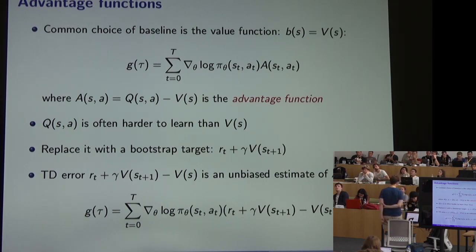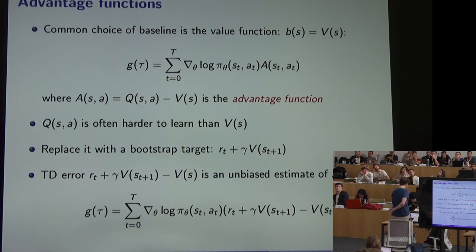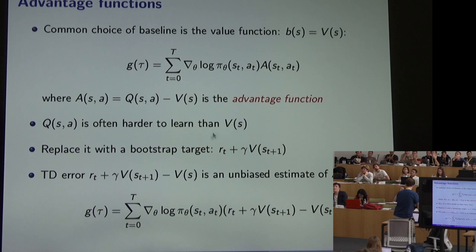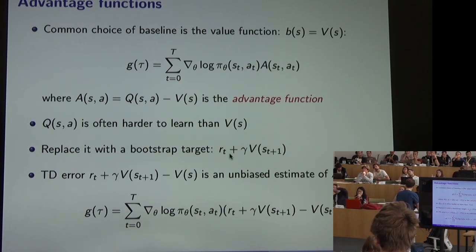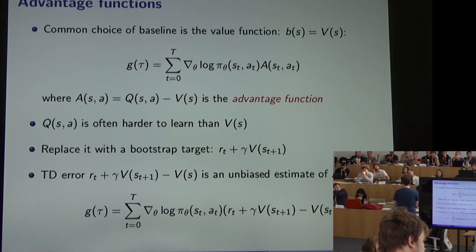A critic representing Q will be hard to train, whereas V is much easier to learn. So if we can feasibly learn V but not Q, we can replace the advantage function with an unbiased estimate constructed via bootstrapping: rather than querying the critic for Q, we construct an estimate on the fly using a sample reward plus the discounted value of the next state.